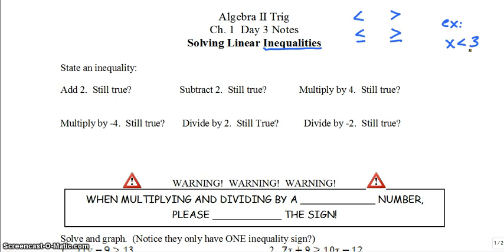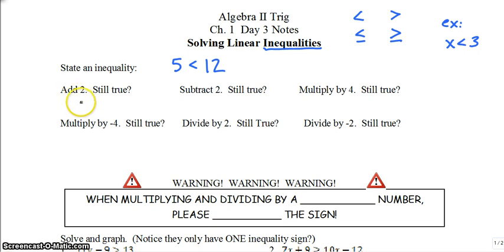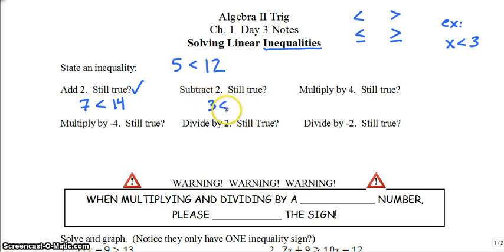We're going to look at what happens with a few different math operations when you're working with an inequality. Let's use something like 5 is less than 12 — that's a true inequality. If we add 2 to both sides: 5 plus 2 is 7, 12 plus 2 is 14. Is 7 less than 14? Yes. If we subtract 2 from both sides: 5 minus 2 is 3, 12 minus 2 is 10. Is that inequality still true? Yes, that's true.